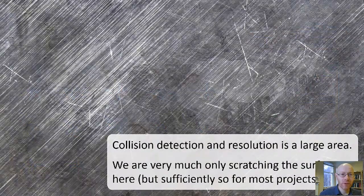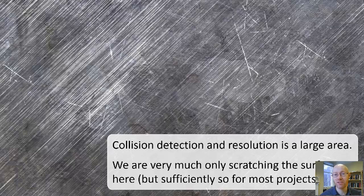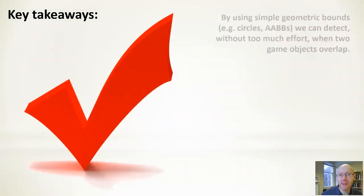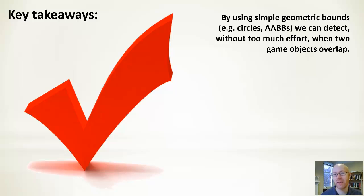That's all for this one — we really are only scratching the surface of what's available in collision detection, but what we've looked at is probably all we need to get started in most 2D games. Key takeaways: by using simple geometric bounds — circles and AABBs — it is possible without much effort to work out when two of them overlap, and from that detection we can provide the appearance of solidity, detect collisions between objects, detect pickups, and trigger a whole host of other useful in-game events.